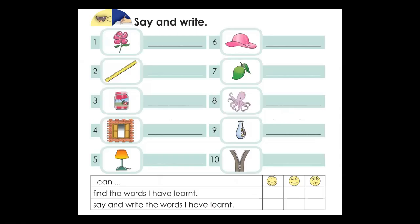Now we are going to say and write these words. Look at the first word — flower. It's a flower: F-L-O-W-E-R, flower. Look at the second picture — what is this? It's a ruler. How do we spell ruler? R-U-L-E-R, ruler.